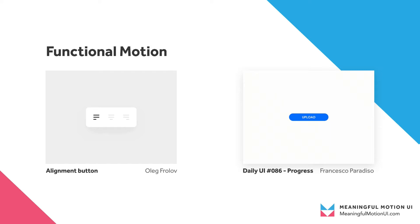The first example here is an alignment indicator. The buttons slide over rather than snapping immediately, and the alignment of the icon demonstrates how the text will align too. You can also see there's some subtle click feedback — the user is getting an idea that their click was registered and the effect that it will have.